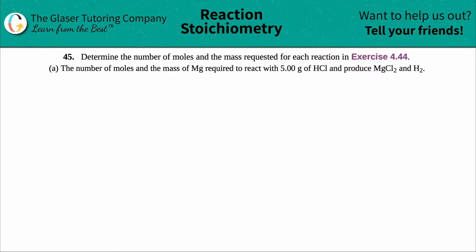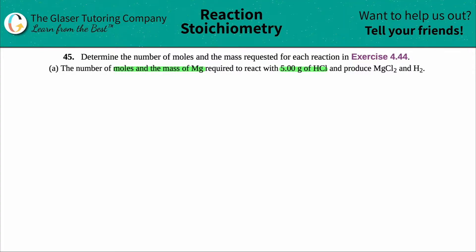Number 45 — determine the number of moles and the mass requested for each reaction in exercise 4.44, letter A. We have to find the number of moles and the mass of magnesium (Mg) which is required to react with 5.00 grams of hydrochloric acid (HCl) to produce magnesium chloride and hydrogen.